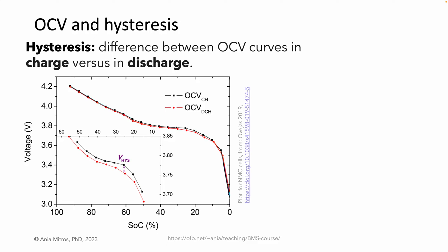Hysteresis is the difference between OCV curves in charge versus in discharge. Let's see what that looks like on a plot. The y-axis is cell voltage and the x-axis is state of charge, with 100% SOC on the left. The black curve shows the OCV for charging and red for discharging. As we charge, the voltage will follow the black curve, and as we discharge, it will follow the red curve.